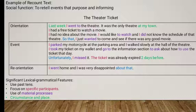The last generic structure is reorientation: a personal comment about the event or what happened in the end. From the example of recount text, you can also see the significant lexical and grammatical features used. First, use of past tense. Second, focus on specific participants — you can see these highlighted in red. Third, use of material processes — highlighted in blue. And last, circumstance of time and place — highlighted in green.